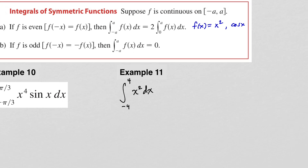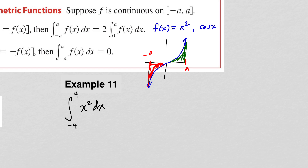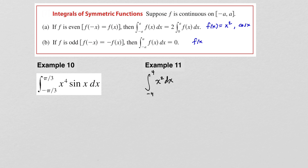If f is an odd function, the integral from negative a to a of f of x equals zero. An odd function is symmetric through the origin, so when you integrate from negative a to positive a, the area above the x-axis and the area below cancel each other out, making the integral zero. An odd function satisfies f of negative x equals negative f of x; examples include x cubed and sine of x.